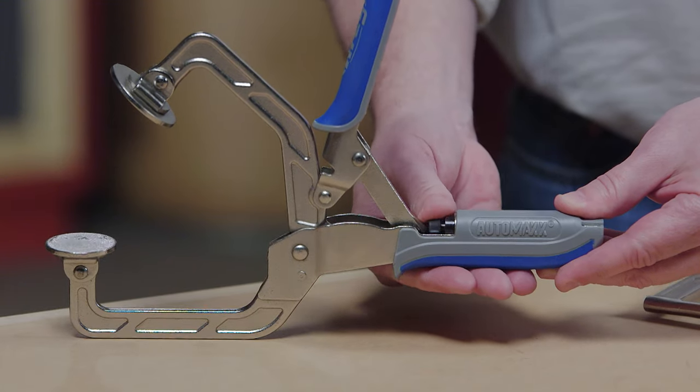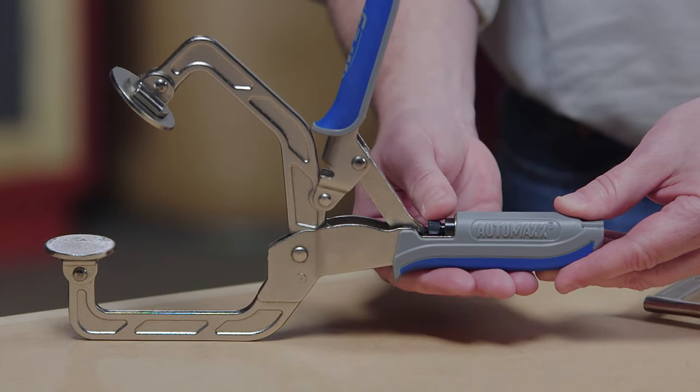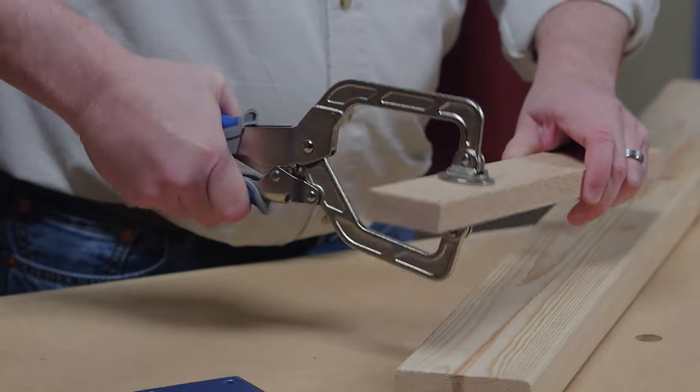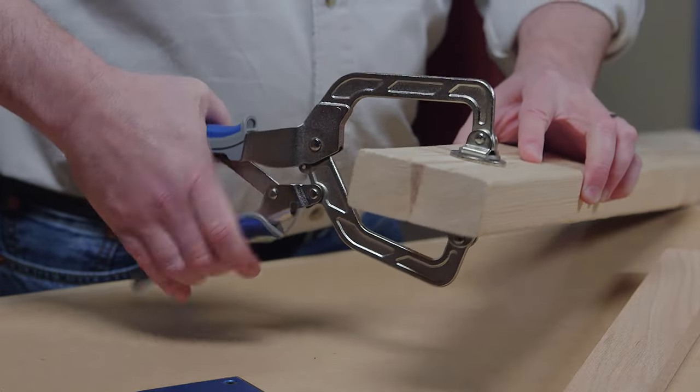A simple thumb screw gives complete control over that clamping pressure. With AutoMax, set the pressure once and Auto Adjust Technology maintains it every time at every point in the clamp's capacity.